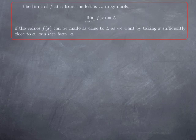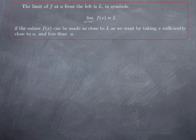More formally, the limit of f at a from the left is L if the values of f of x can be made as close to L as we want by taking x sufficiently close to a and less than a. The only difference with the definition of limit that we gave before is and less than a.